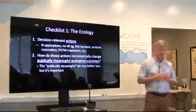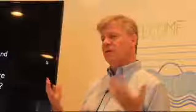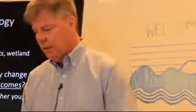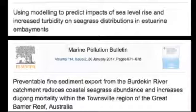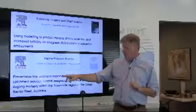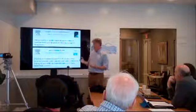The second theme is that ecological outcomes our science is measuring need to be publicly meaningful to connect to social analysis. Something you could explain to your next-door neighbor and they would understand why it's important. I did a Google search and found a contrast in just the titles of two papers — both about turbidity and seagrass — but one mentions 'preventable sediment export,' which frames it as something we can manage, something we can actually affect.